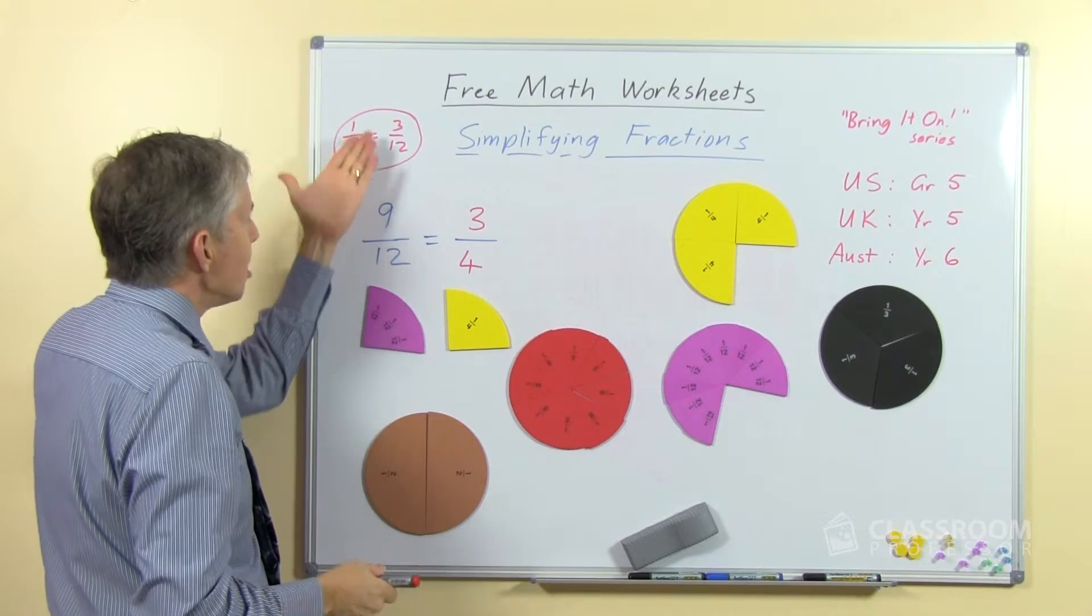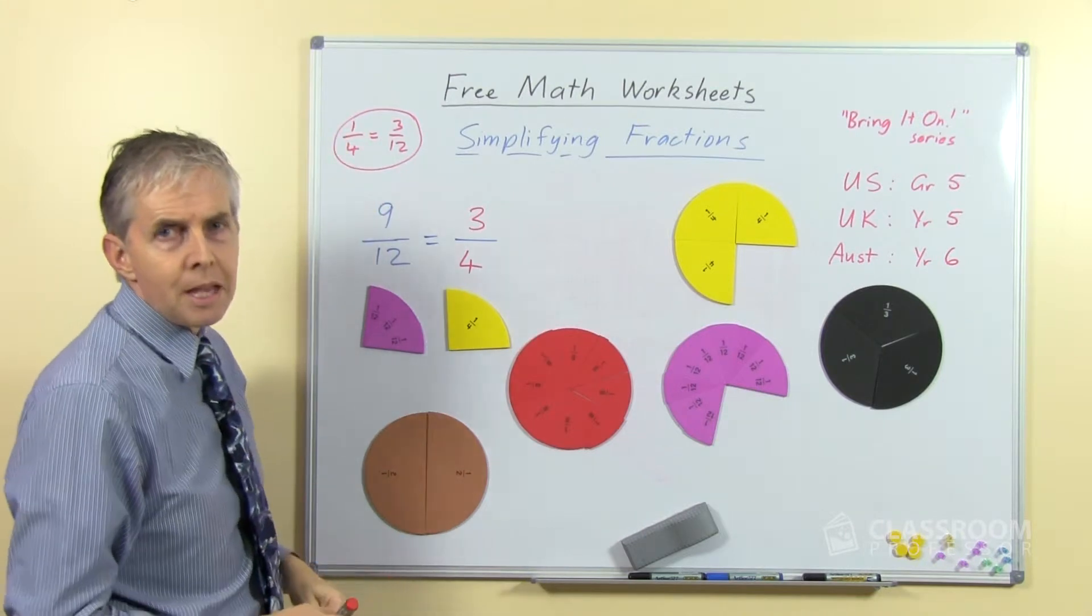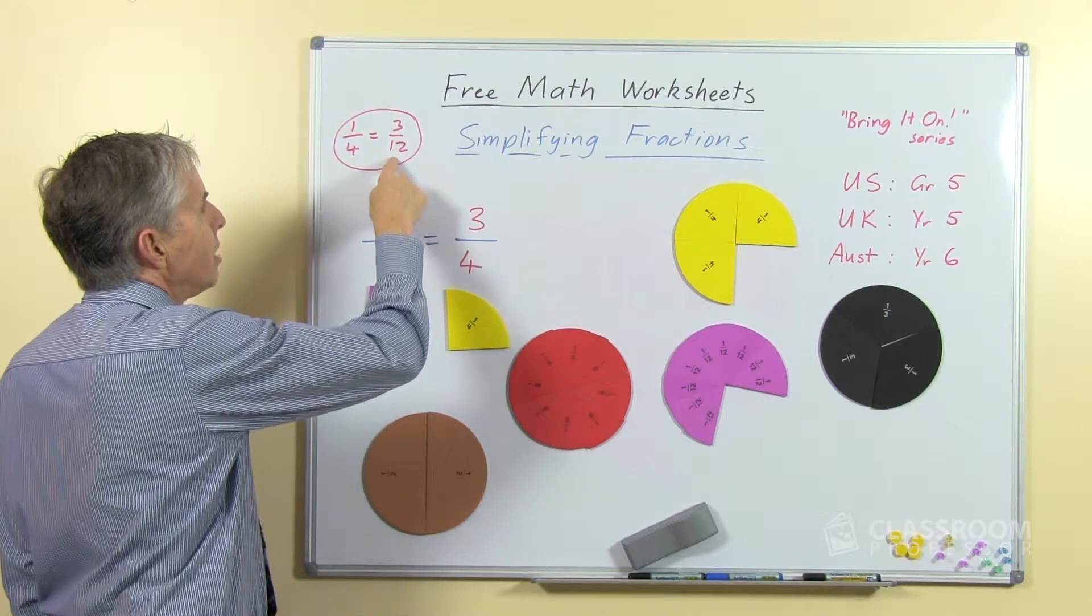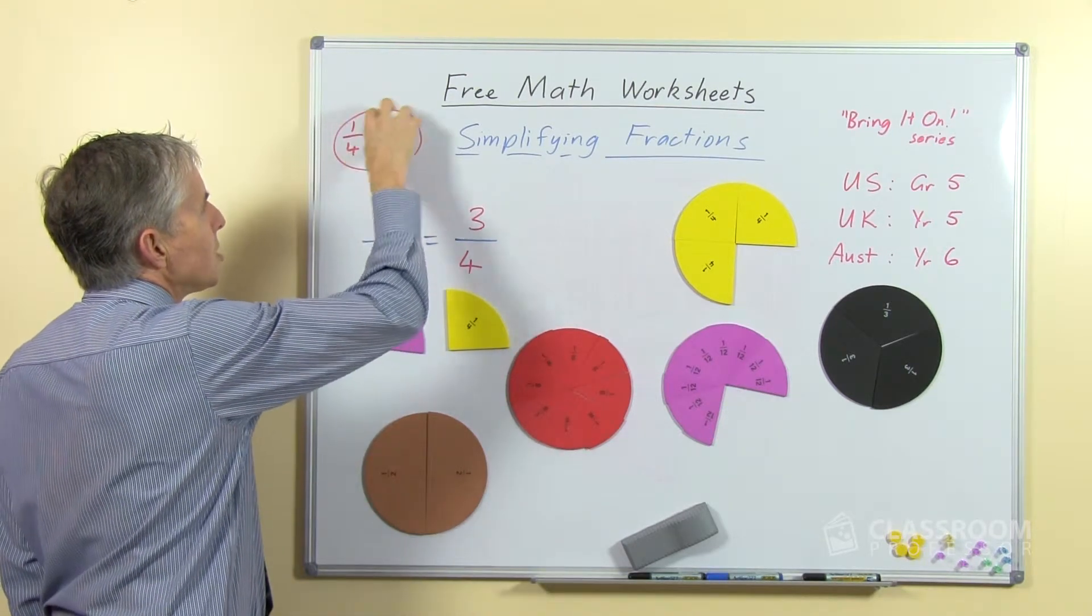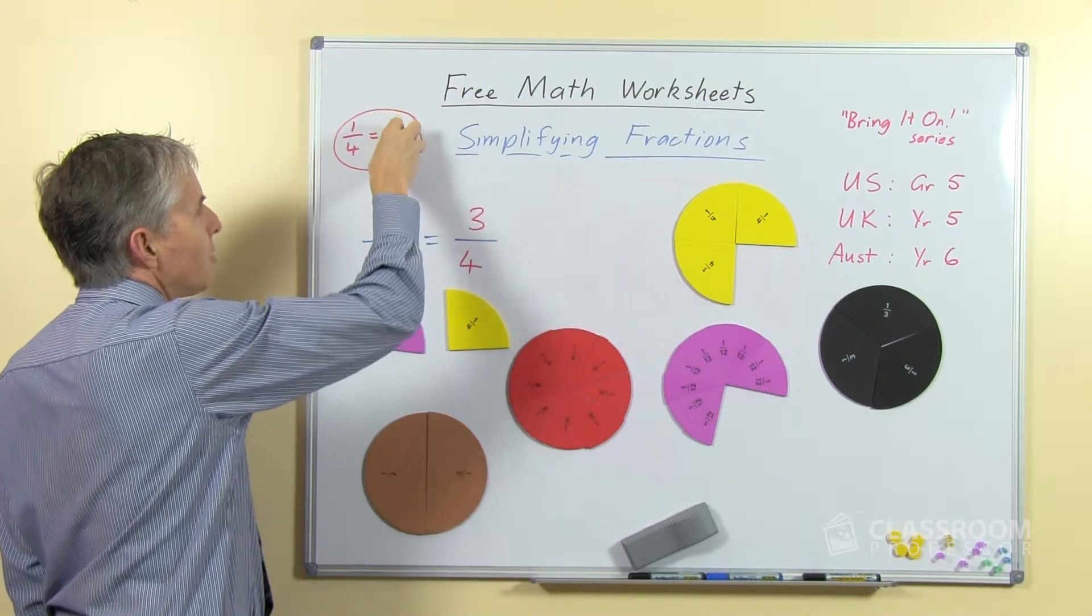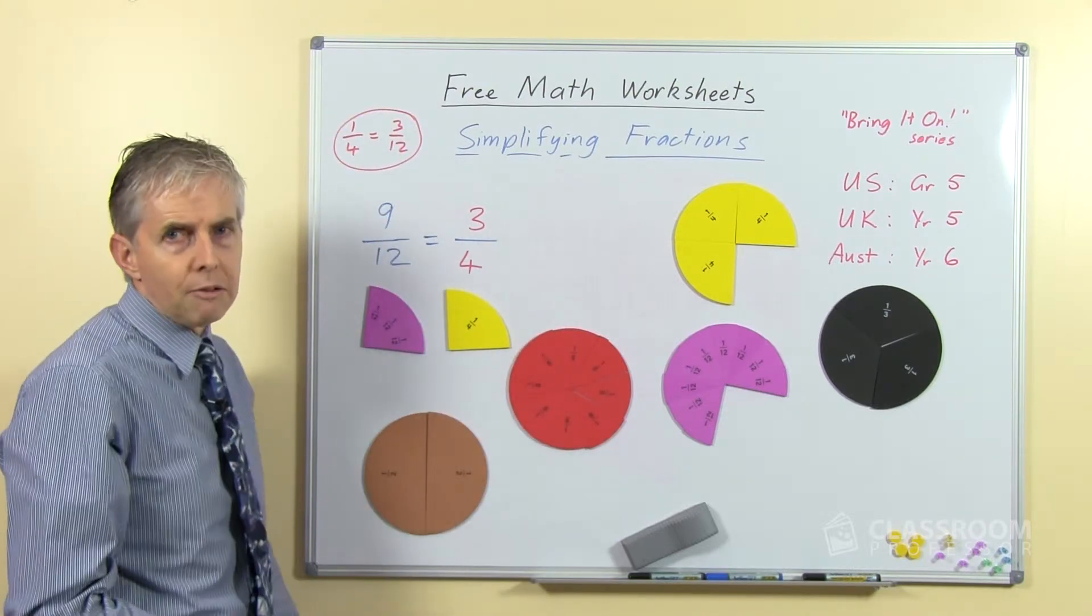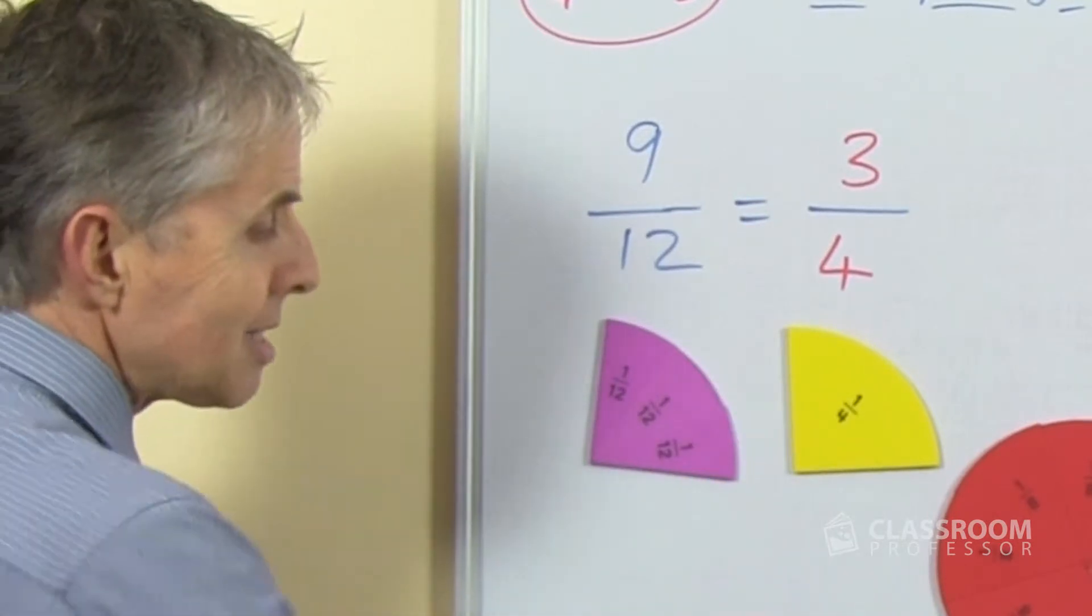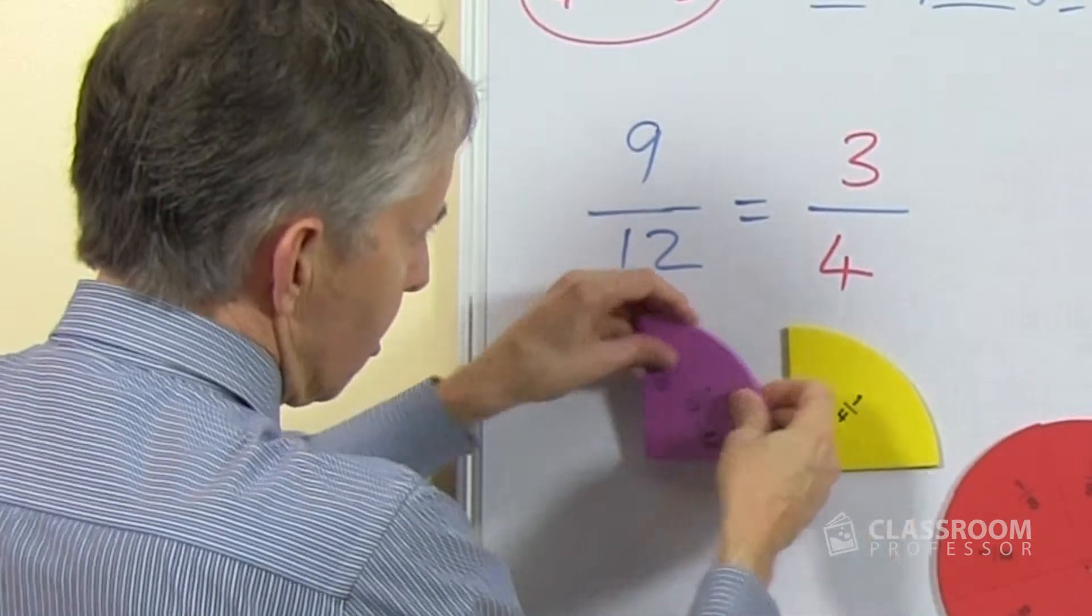We could then say what do you notice about all those numbers? And I think it won't be too difficult for them to see that if we multiply that by three, the numbers on the right hand side are three times, both of them are, than the numbers on the left. And if we look at the fraction pieces we can see that is so, we can see why that is so.